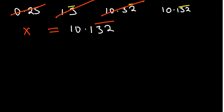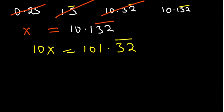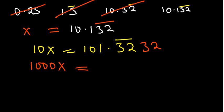The first thing to ensure is that only recurring parts appear on the right-hand side of the decimal. Since 1 is not part of the recurring digits, we multiply both sides by 10: 10x = 101.32 recurring. Now only recurring digits remain on the right. Because we have two recurring digits, 3 and 2, multiplying by 100 moves them across: 1000x = 10132.32 recurring, and recurring digits still continue.